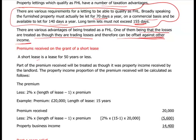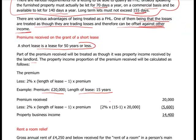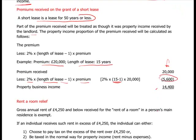Another form of rental income involves lease premiums. A short lease is a lease for 50 years or less, and part of the premium received will be treated as property income for the landlord. For example, if you receive a premium of £20,000 and the length of the lease is 15 years, the taxable amount in year one is calculated as: £20,000 minus (2% × (15 − 1) × £20,000) = £20,000 − £5,600 = £14,400 as your property business income.